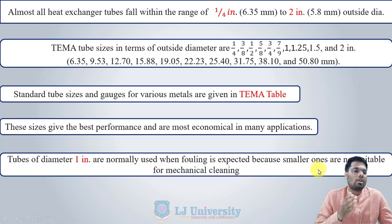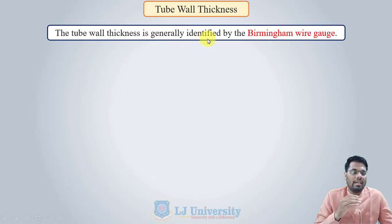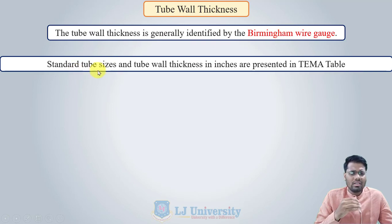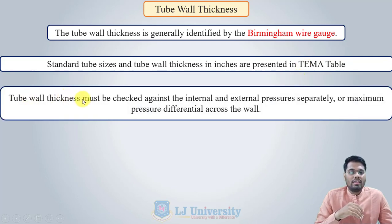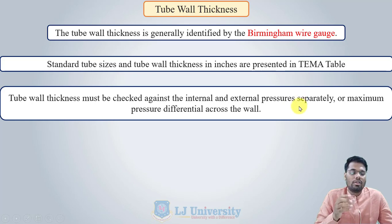Tubes of 1 inch diameter are normally used when fouling is expected because smaller ones are not suitable for mechanical cleaning. Tube wall thickness is generally identified by the Birmingham Wire Gauge (BWG). Standard tube sizes and wall thicknesses in inches are presented in TEMA tables. The tube wall thickness must be checked against both internal and external pressure separately, since the thickness is primarily responsible for withstanding the fluid pressure, and the maximum pressure differential across the wall governs the design.